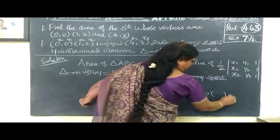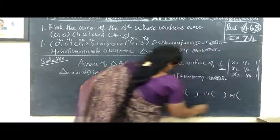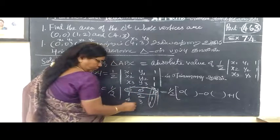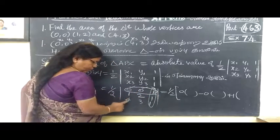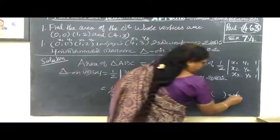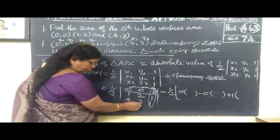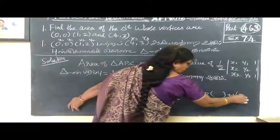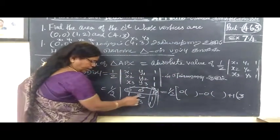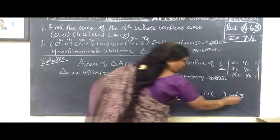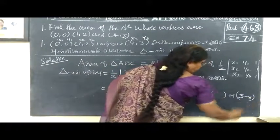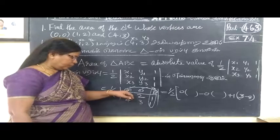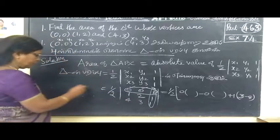This is plus, so one bracket, this is twice. Make 3, 1 and 2 and 3, add minus.